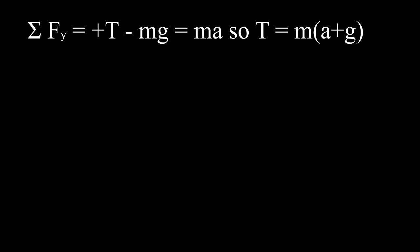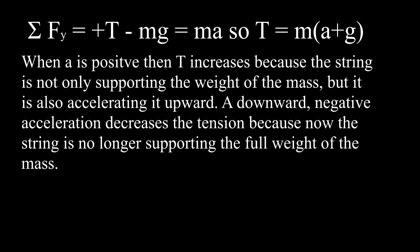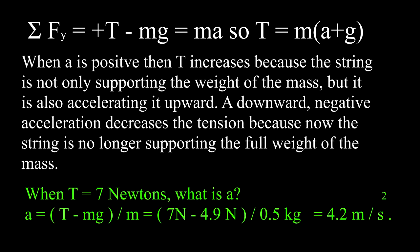The sum of the y-components of forces is plus T minus mg equals ma, so T equals m times (a plus g). When a is upward and positive, the tension increases because the string is not only supporting the weight but also accelerating the mass upward. Negative acceleration decreases tension. When the tension is 7 newtons, the acceleration is a equals (T minus mg) divided by m equals (7 minus 4.9) divided by 0.5 equals 4.2 meters per second squared, which is about half g.